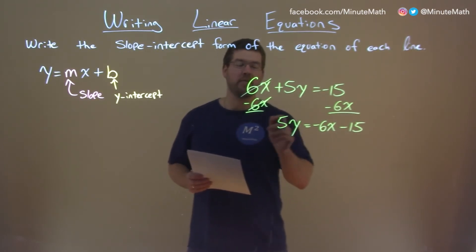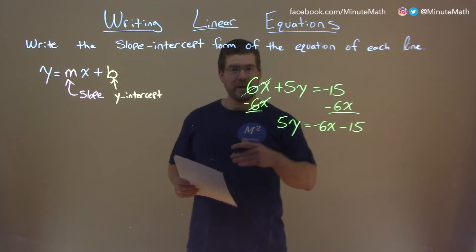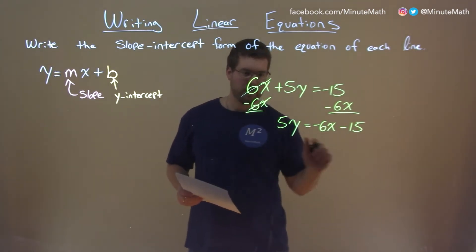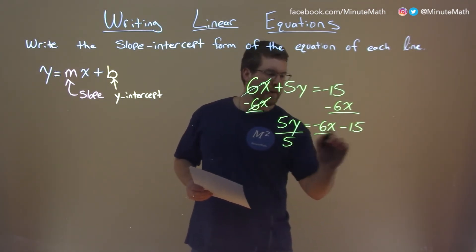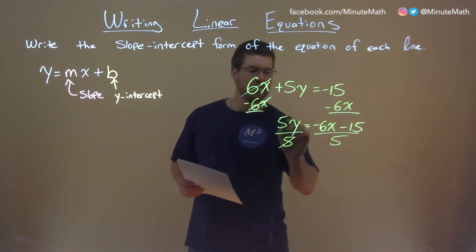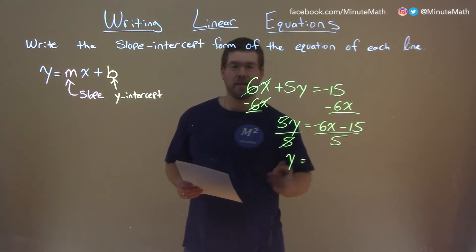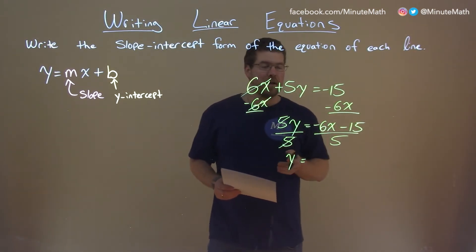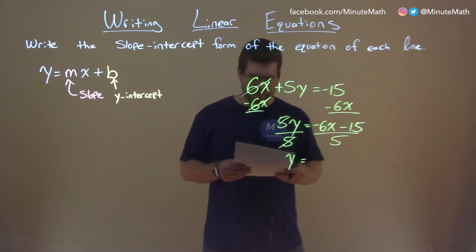Multiplication separates 5 and the y. Opposite of multiplication is division. Divide both sides by 5. This gives us y by itself on the left, which is great, but on the right we need to simplify this.